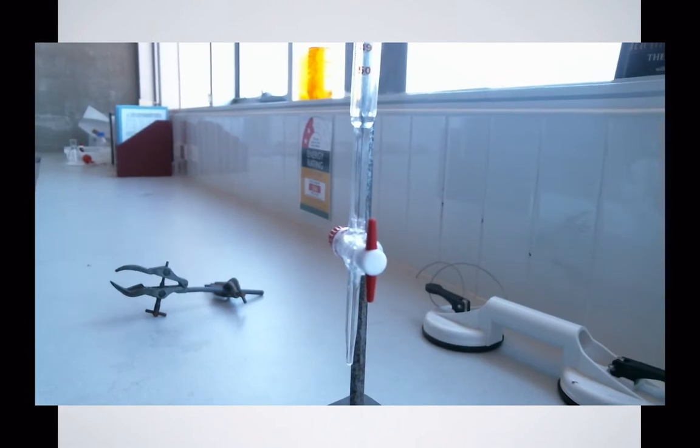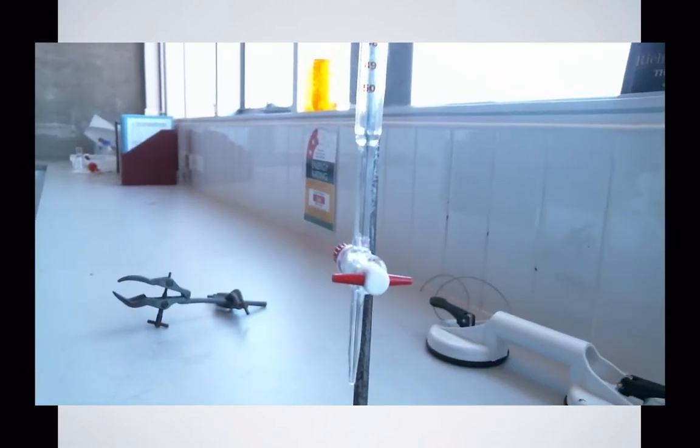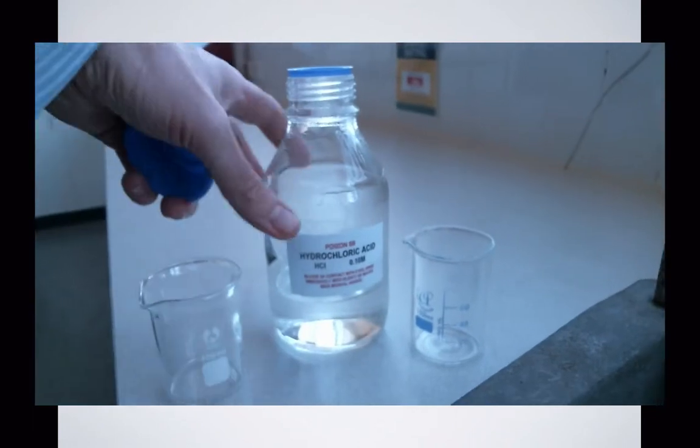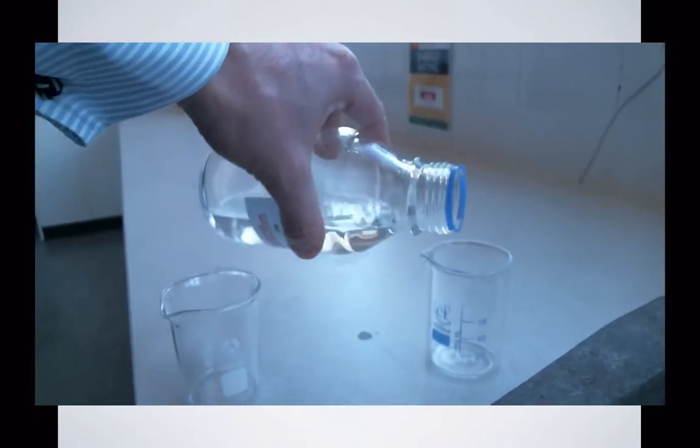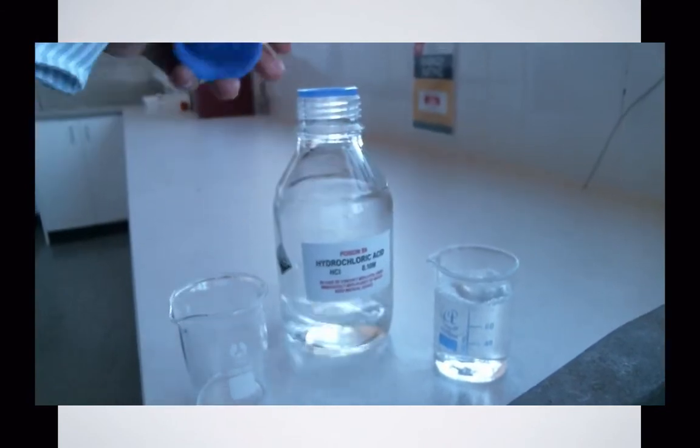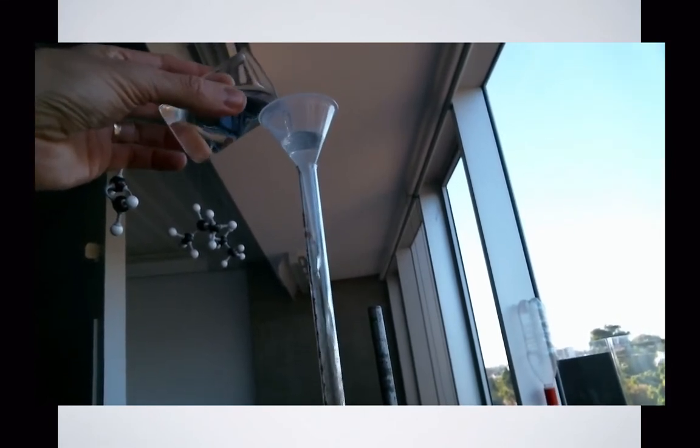Here we're looking at a burette tap which is closed when it's across the flow and open when it's in line with the flow. It doesn't matter which way you turn it, but it's a good idea to shut it before you start filling your burette. I'm putting some hydrochloric acid in a beaker because it's easier to pour from a beaker into the burette, but I'm still going to use a funnel to make sure I don't spill any liquid around the sides.